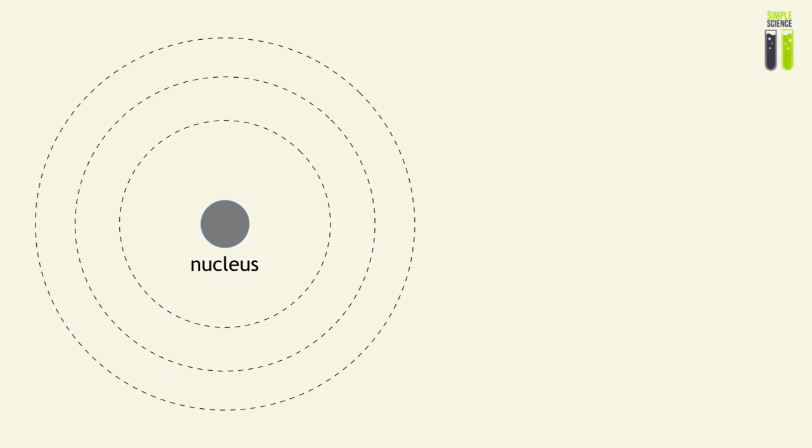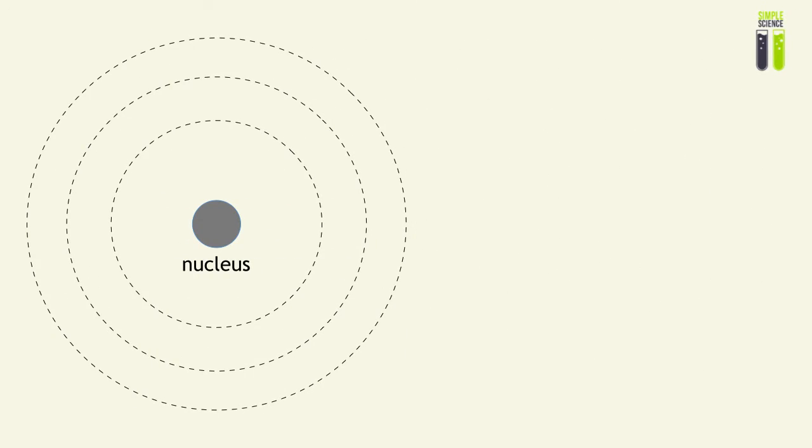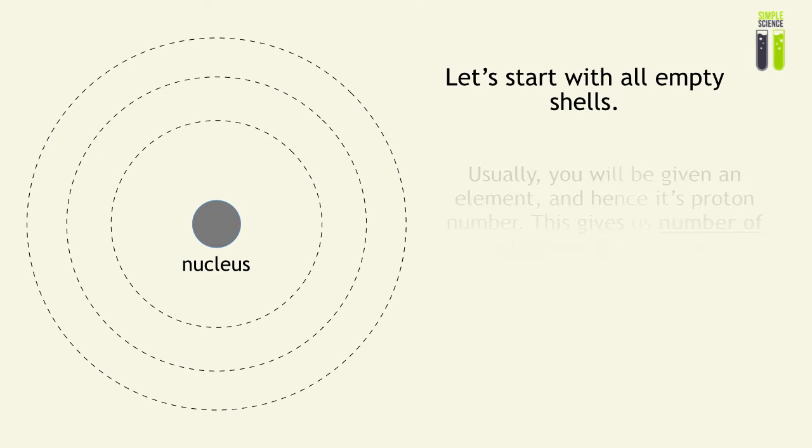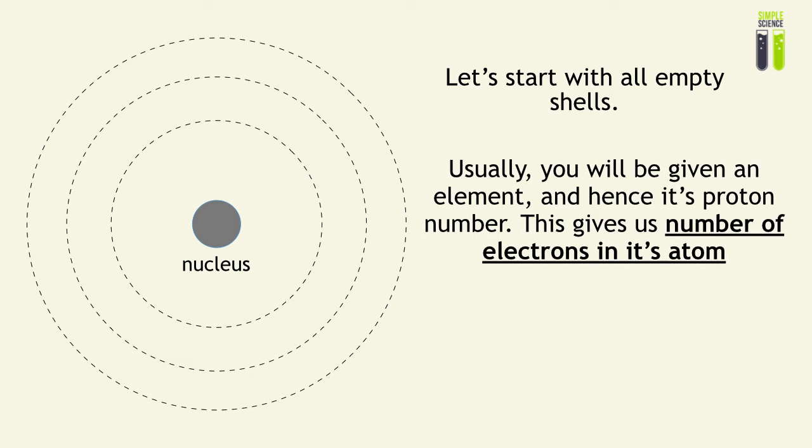So let's look at an empty set of shells around a nucleus. You will usually be given an element and therefore you will be given a proton number. This number will tell you how many protons there are in the nucleus and therefore, since the atom is neutral, the number of electrons in the atom.